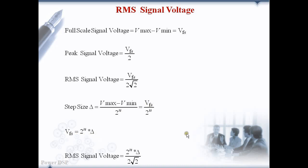We substitute this and get the final equation for RMS signal voltage that is equal to 2 power N into del divided by 2 root 2.